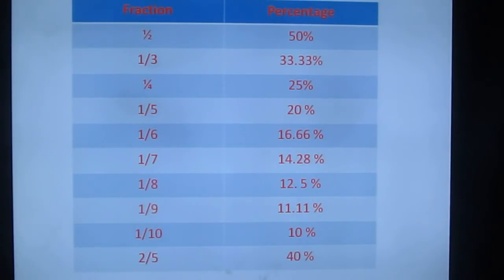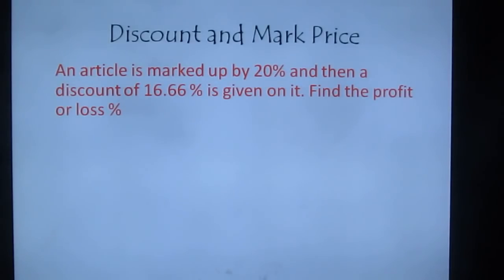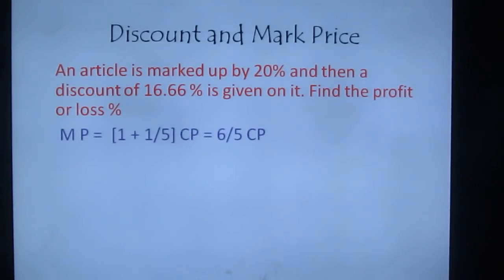First question: an article is marked up by 20%, then a discount of 16.66% is given. Find the profit or loss. When marked up by 20%, since 20% = 1/5, the marked price equals (1 + 1/5) × CP = 6/5 × CP.